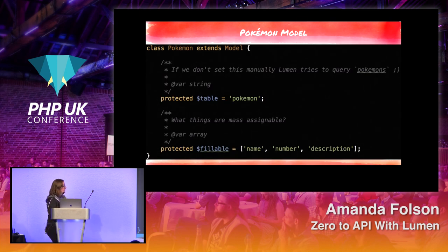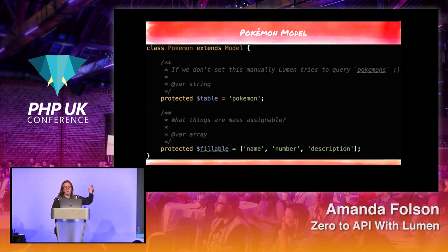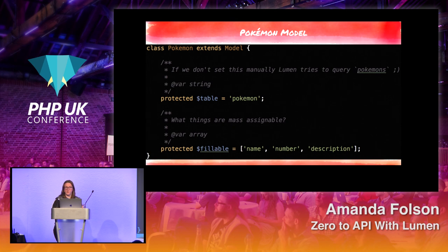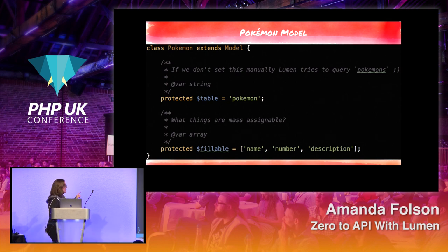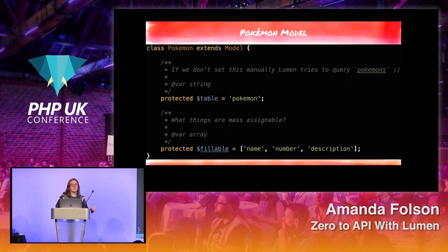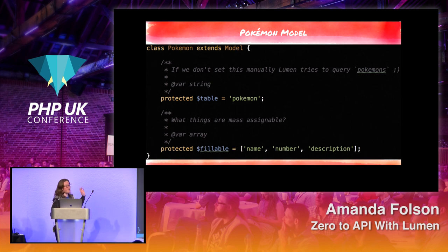Our model is not very complicated. The protected table property is set because Eloquent tries to pluralize things for you, but the plural of Pokemon is actually Pokemon. We've also filled the fillable array with things we want to protect from mass assignment — just the name, number, and description — the things we want users to be able to manipulate.